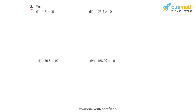Question number three says to find the product of the given numbers in each of the bits. Before we start, what we have to understand is wherever we have a decimal number multiplied by a number which is a power of 10, the decimal will move towards the right by as many places as there are zeros in the power of 10.